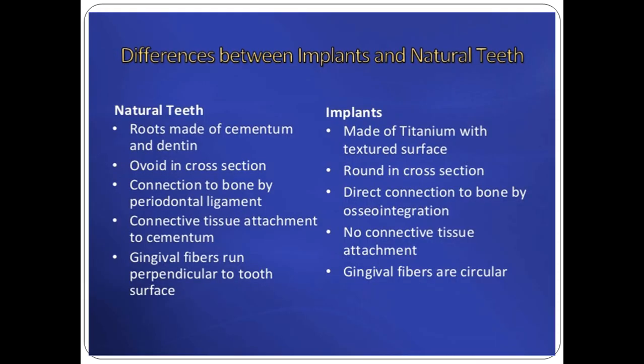Key differences: natural tooth roots are made of cementum and dentine, while implant roots are made of titanium with a textured surface. Natural teeth are ovoid in cross-section; implants are round. Natural teeth connect to bone via the periodontal ligament; implants connect directly to bone by osseointegration. Natural teeth have connective tissue attachment to cementum; implants have low connective tissue attachment. Gingival fibers run perpendicular to the tooth surface in natural teeth, whereas in implants the gingival fibers are circular.